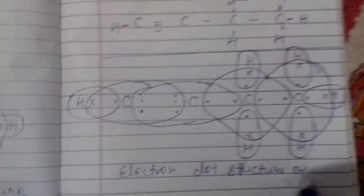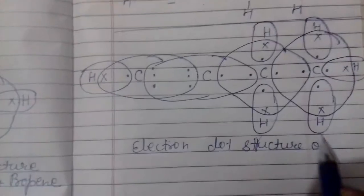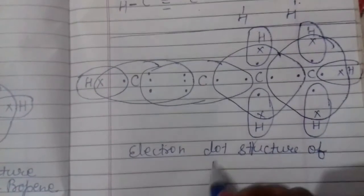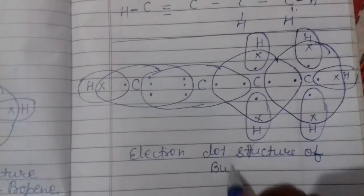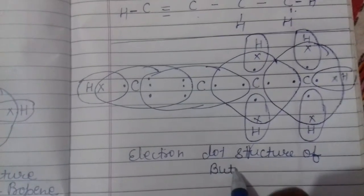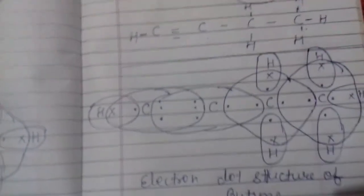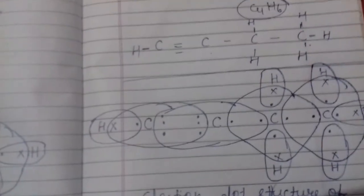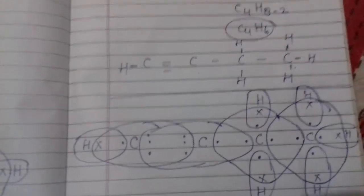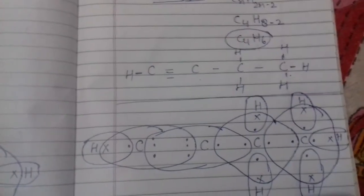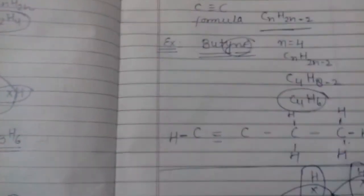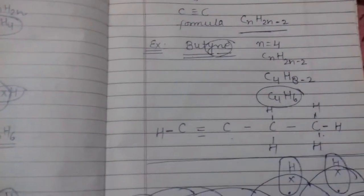तो अगर name दे रखा है और उसकी structure बनानी है, तो पहले bond structure बना लेते हैं तो बहुत easy हो जाता है। Naming में याद रखना है: meth, eth, prop, but, pent - इसी तरीके से हमें इसकी structure बनानी है।